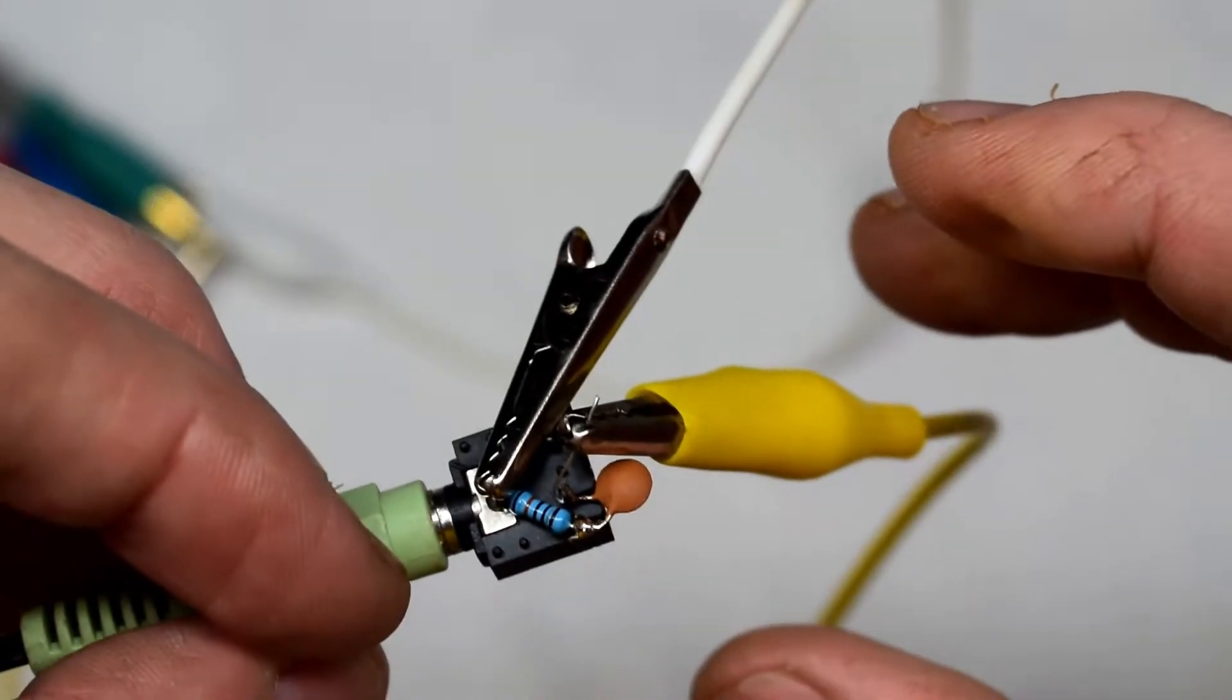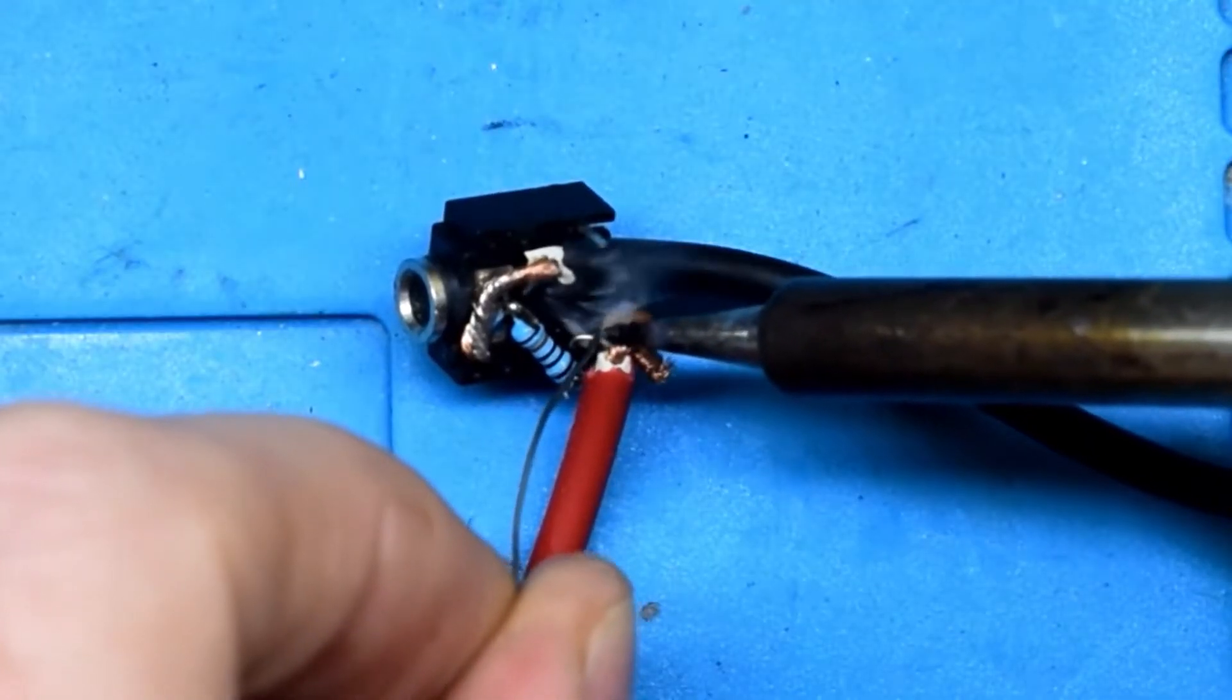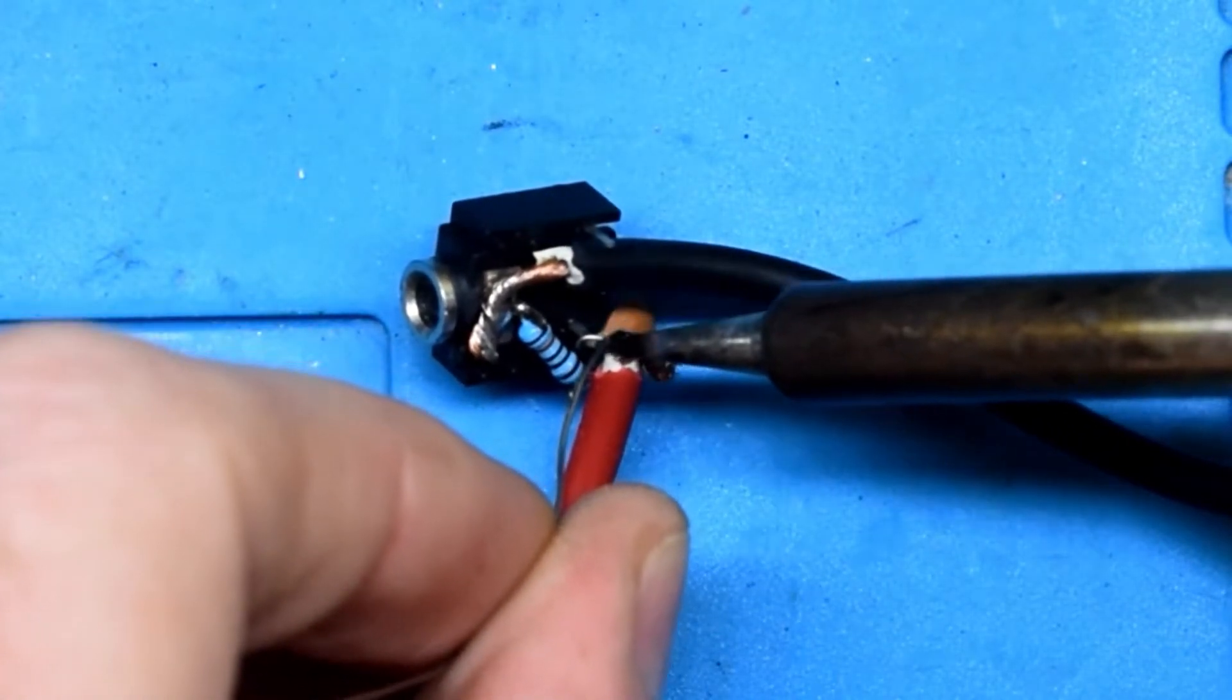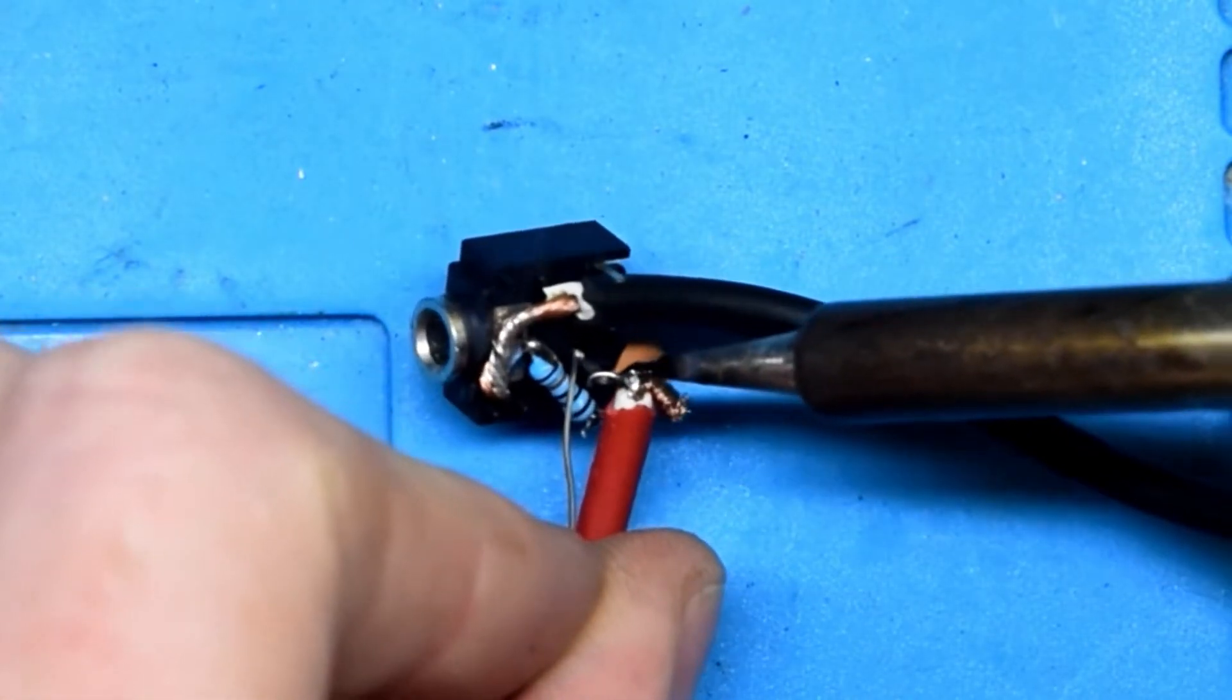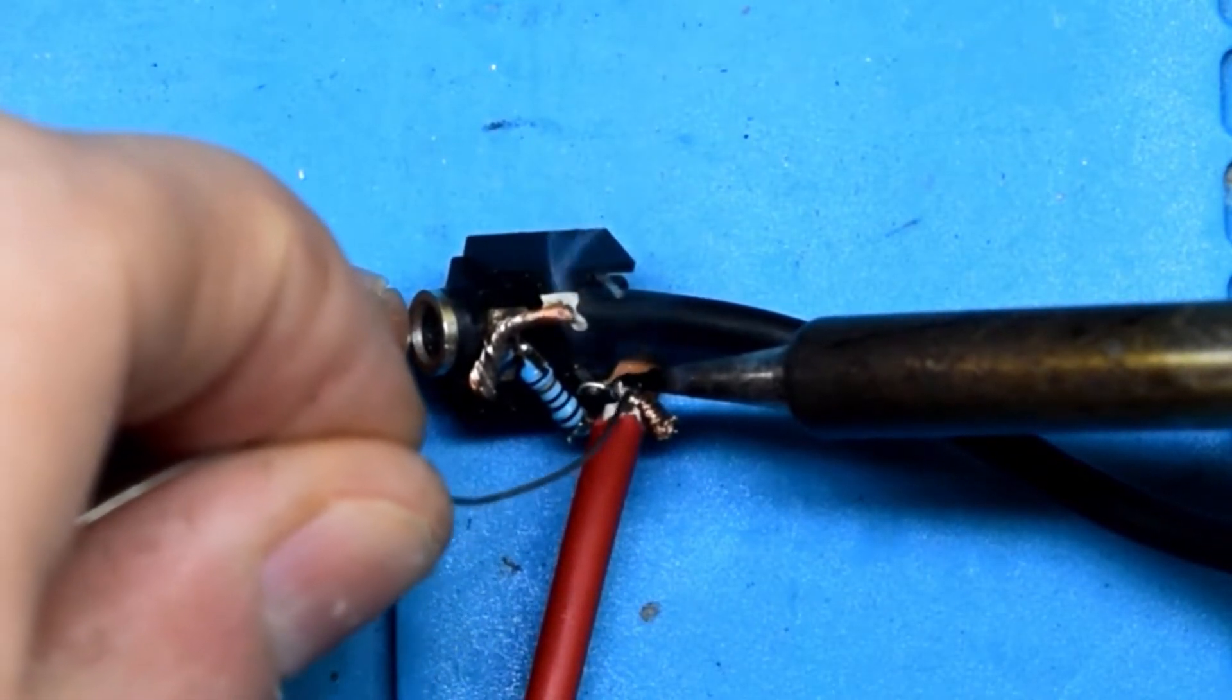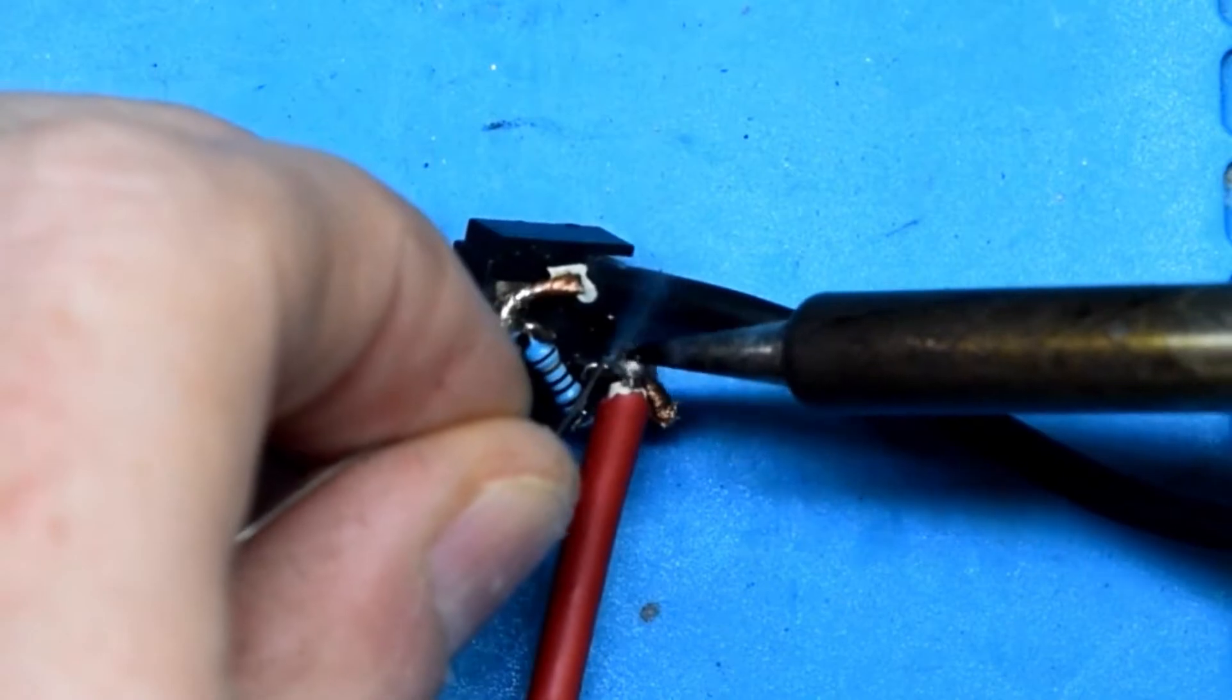So this soldering on my test probe there, the positive one I'm going to the input of the capacitor. This will allow the signal to pass through but it will block the DC voltage. And then the negative lead I will connect to the ground.